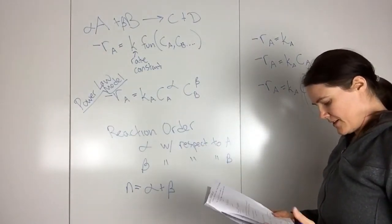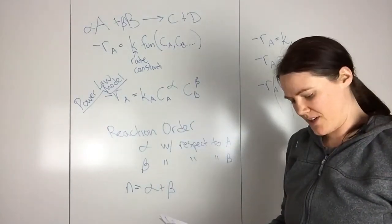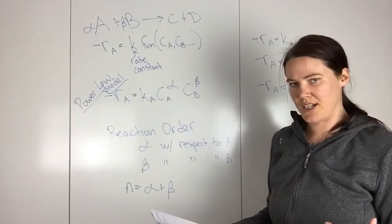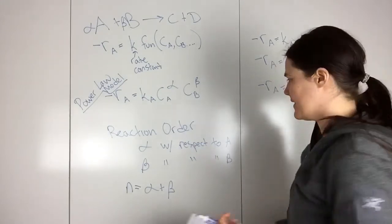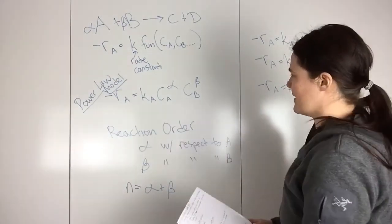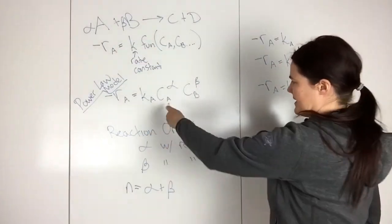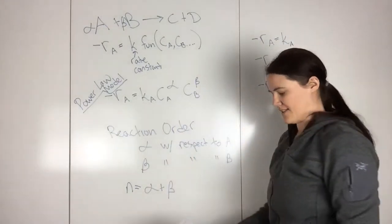And et cetera. So that's the power law model. So then elementary reaction is one that involves a single step. And the stoichiometric coefficients in that reaction are identical to these powers in the rate law. So then this would be an elementary reaction because the stoichiometric coefficients are the powers in this.